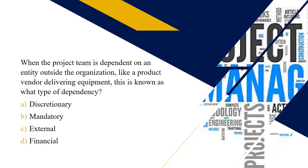Next question: when the project team is dependent on an entity outside of their organization, like a product vendor delivering equipment, this is known as what type of dependency? The choice you should have made is choice C — external. An external dependency is where an entity or condition outside of the project drives the overall scheduling for a specific task.